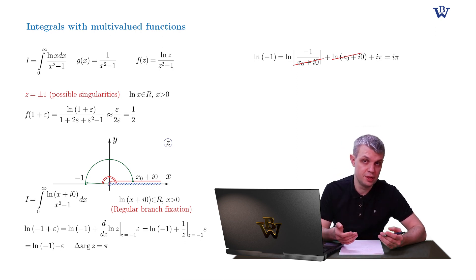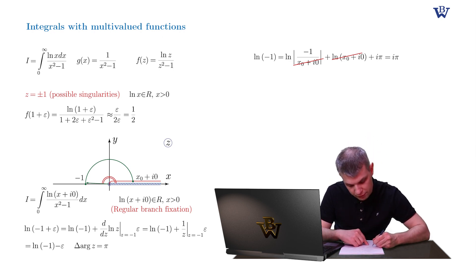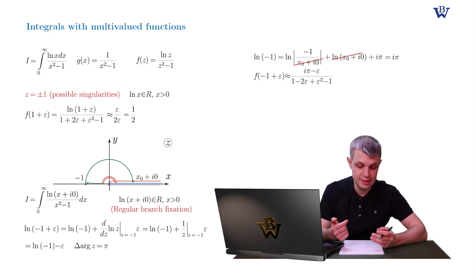Now the expansion of the denominator for our function is done and we can perform the full expansion. f of minus 1 plus epsilon equals i pi minus epsilon divided by 1 minus 2 epsilon plus epsilon squared minus 1. And retaining only the leading singular terms we obtain minus i pi divided by 2 epsilon. So we see that our integral does in fact have a singularity at point z equals negative 1.